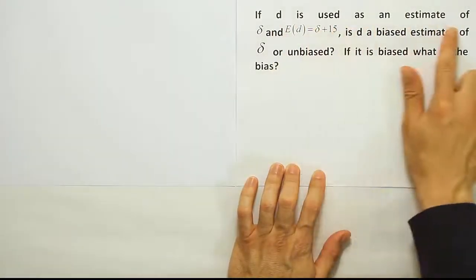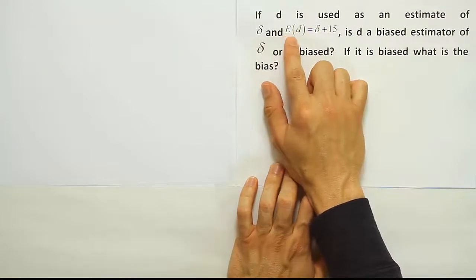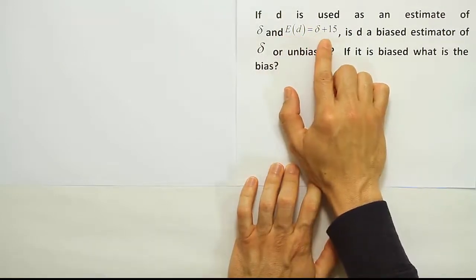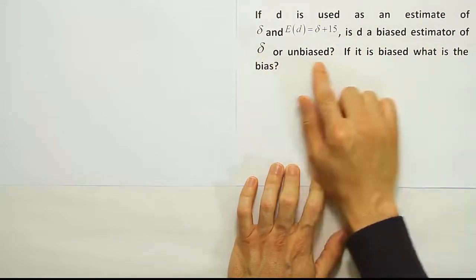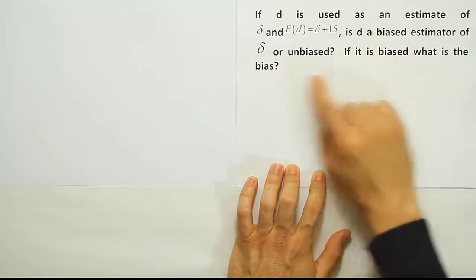If D is used as an estimate of delta and the expected value of D is equal to delta plus 15, is D a biased estimator of delta or unbiased? If it is biased, what is the bias?